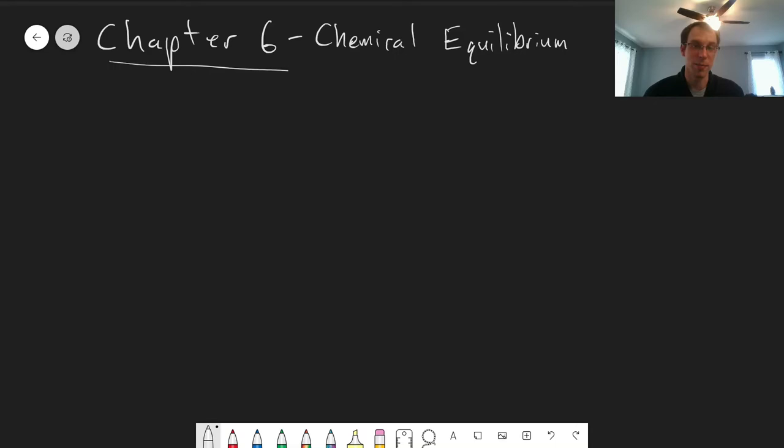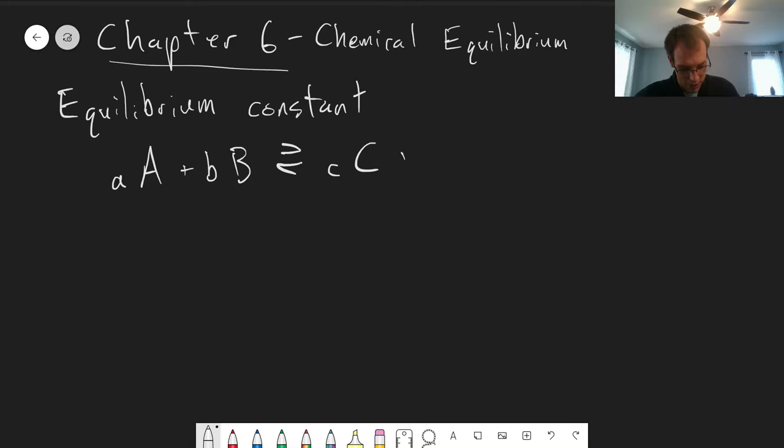So just as a reminder, this should be familiar from freshman chemistry, but it's the idea of an equilibrium constant. If we have a generic reaction where we take A moles of A plus B moles of B in equilibrium with C moles of C and D moles of D. This is a physical chemist's favorite reaction, just A, B, C, and D.